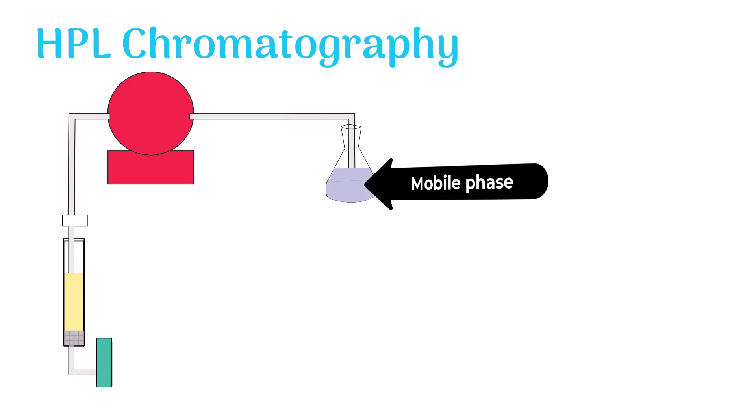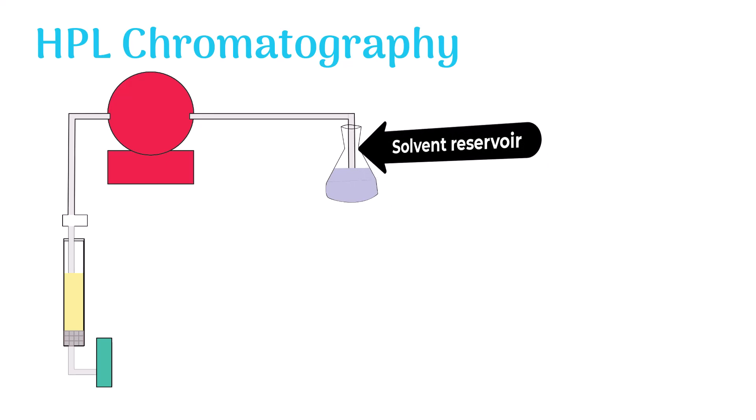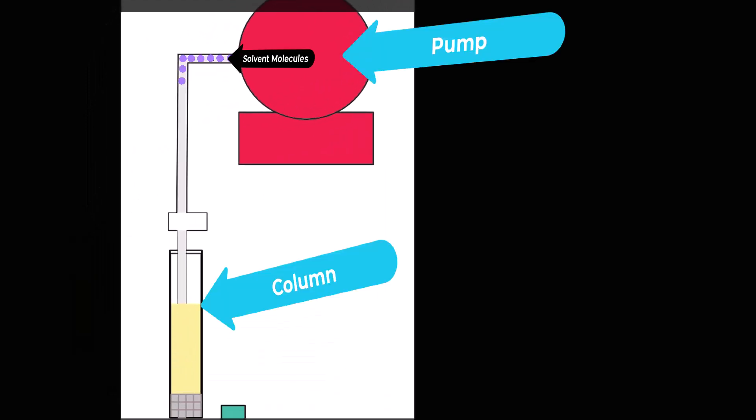The mobile phase in HPL chromatography is a liquid usually placed in a solvent reservoir which is linked to pump. The pump forces the solvent molecules to move through the column with high pressure.